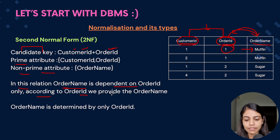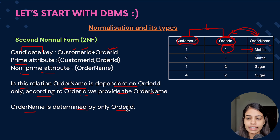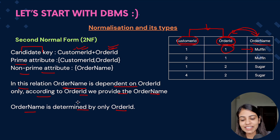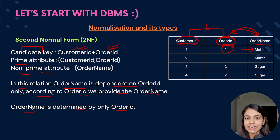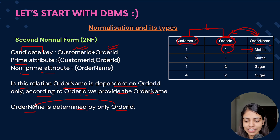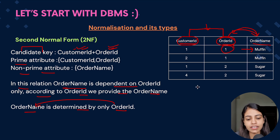According to order ID we provide the order name, and order name is determined only by order ID. Here customer ID and order ID together are acting as a candidate key, but only a part of the candidate key is determining the non-prime attribute. So we can say that there is a partial dependency and this particular table is not in second normal form.